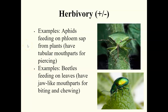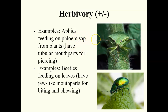Additional herbivory examples: aphids are very small insects with long tubular mouthparts that pierce into the stem of a plant and suck out the phloem sap, which is where the plant stores its sugars. Beetles have jaw-like mouthparts that allow them to bite, chew, and eat leaves.